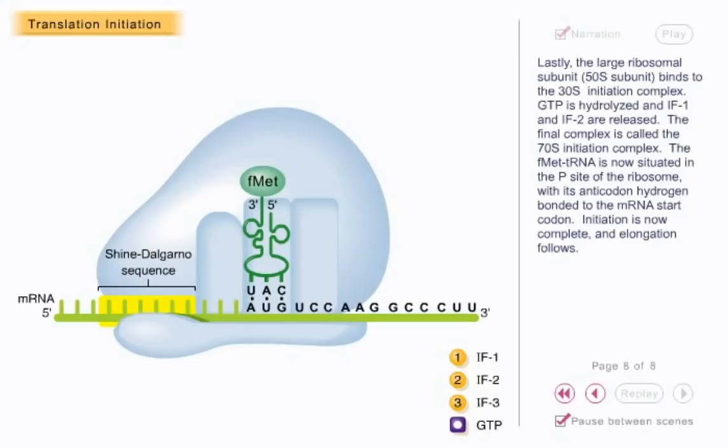The FMET tRNA is now situated in the P site of the ribosome, with its anticodon hydrogen bonded to the mRNA start codon. Initiation is now complete and elongation follows.